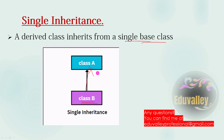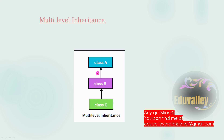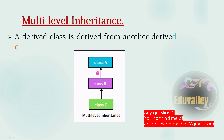So this is a single inheritance — in a class, one class can inherit. Now this is a multi-level inheritance. In multi-level inheritance, a class is derived from a derived class. It is derived from another derived class.